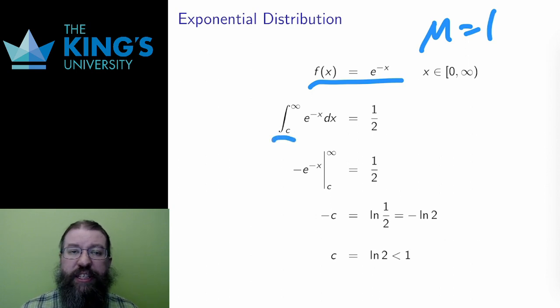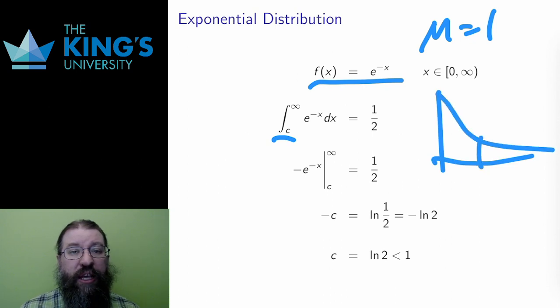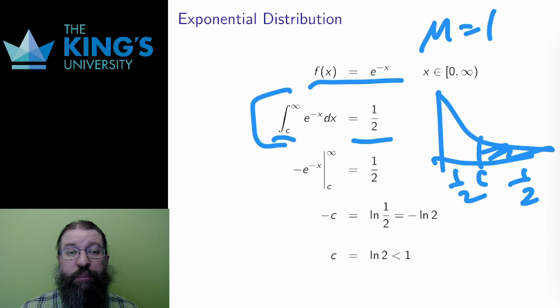Well, I want some number c that the area on either side of c is 1 half. I'll calculate the area on the right, so that means that the area from c to infinity must be 1 half. I'll do the integral, and this is an improper integral with a limit, but I've not shown the details here. And if I solve this, I find that c must be the natural logarithm of 2.